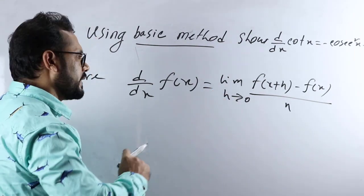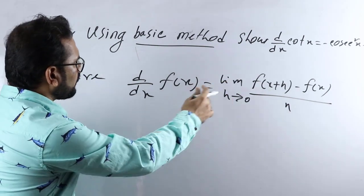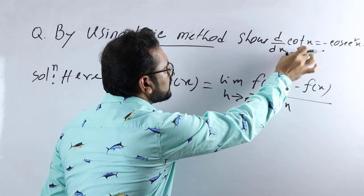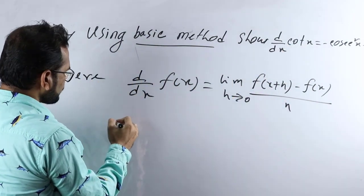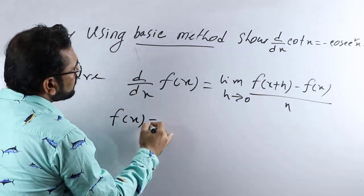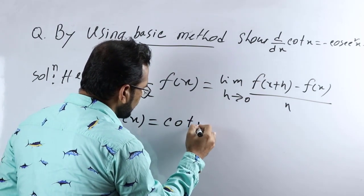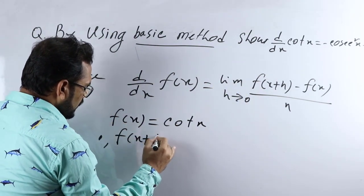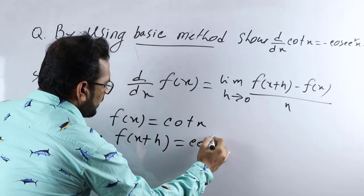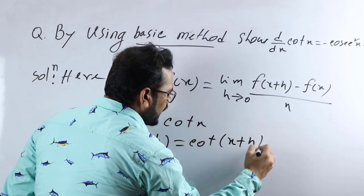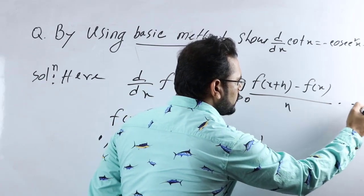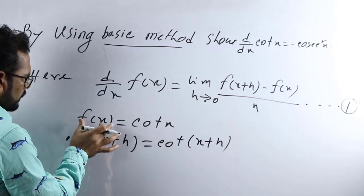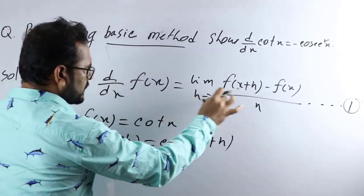Now we find f(x) and f(x+h). Here f(x) is equals to cot x, and then f(x+h) will be cot(x+h). We will name these — this is equation number one.